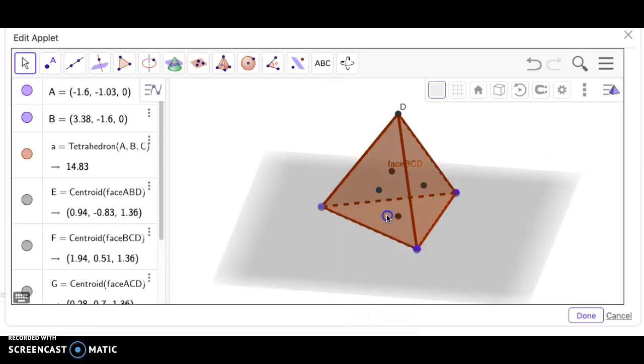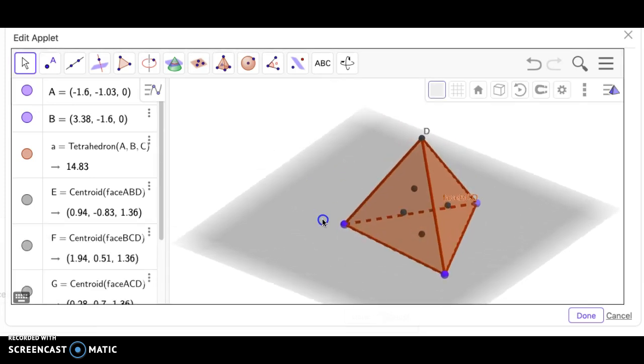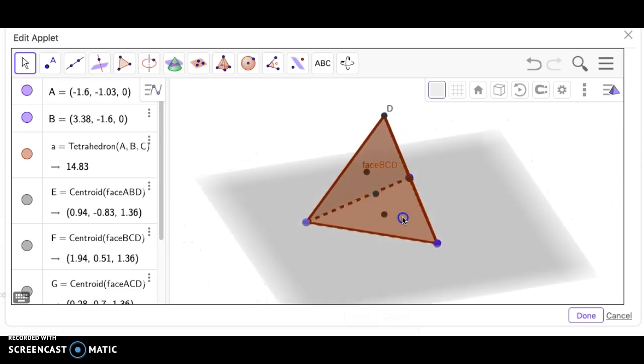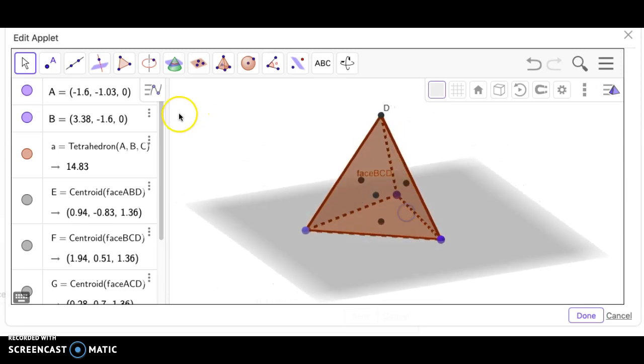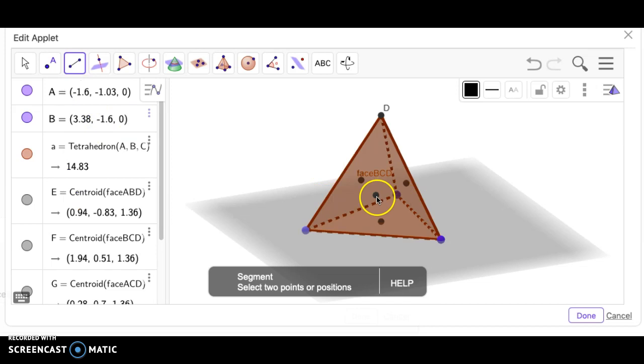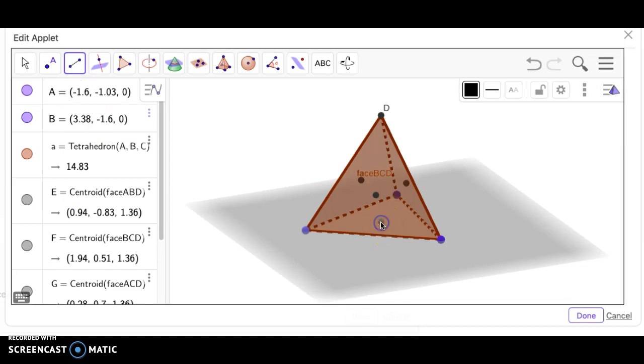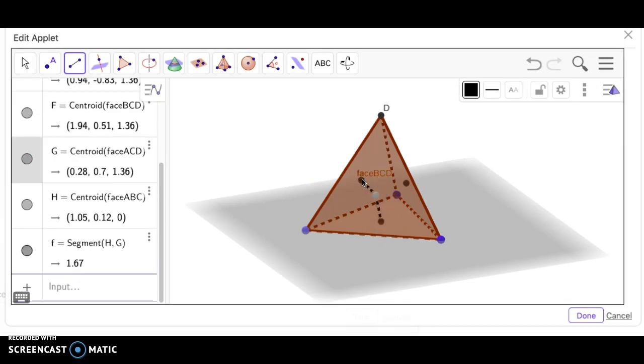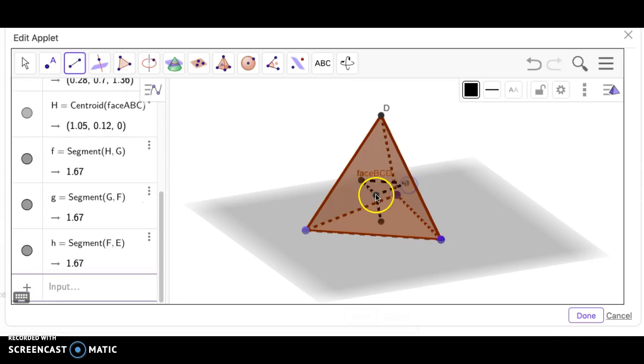Now that we've found the centroid for every face, we need to connect them using line segments. To do this, I'm going to go up here to the line segment tool and click segment. Then I'm going to draw lines in between each of the centroids.